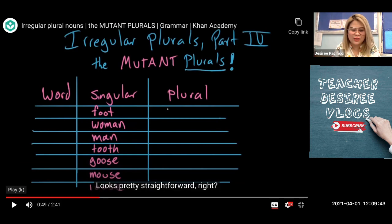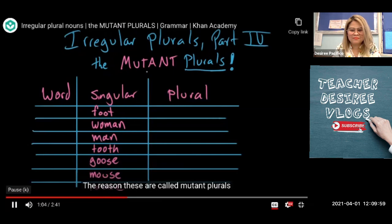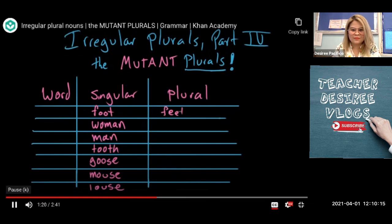Okay, let's check if your answer is correct. The thing about these words is that none of them take S as a plural. So the plural of foot is not foots. The plural of woman is not woman's. The plural of tooth is not tooth. The reason these are called mutant plurals is because the vowel sound turns into a different sound — a different vowel sound. So the plural of foot is not foots, but feet.